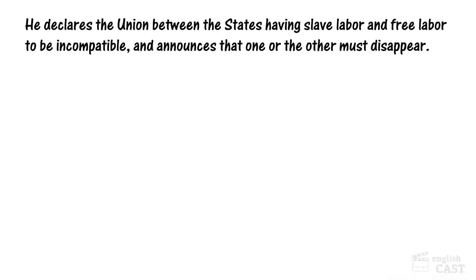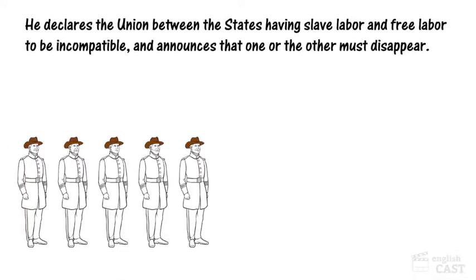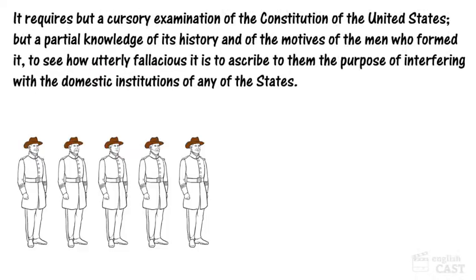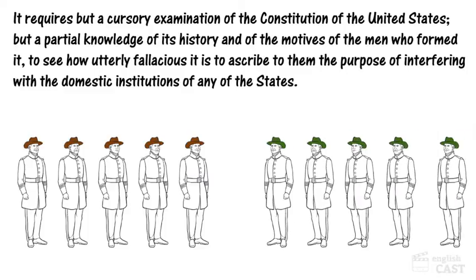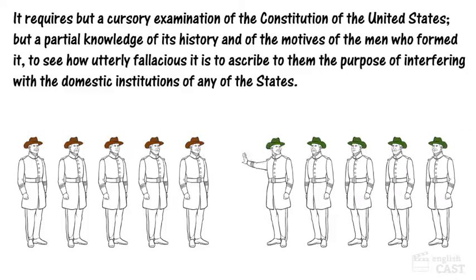Earlier in the speech, Davis explains his opponent's argument that it is up to the federal government to rid the states of slavery. Then he presents his counterclaim that the Constitution does not permit the federal government to interfere with state governments. In this counterclaim, Davis makes an important argument: the Constitution, as written, did not give the federal government the right to abolish slavery in states that chose to keep it.